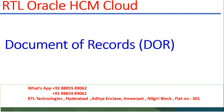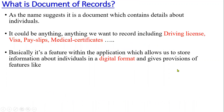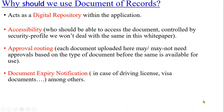Welcome to RTL online trainings. In this session we are going to talk about Document of Records, which we call DOR. In human capital management, when we have thousands of employees, it is required for organizations to maintain documents of an employee. As the name suggests, it is a document which contains details about individuals - employees' driving licenses, visas, pay slips, medical certificates, passport information, or social security numbers - maintained in digital format.